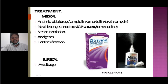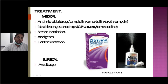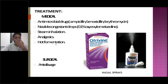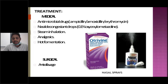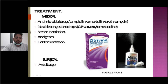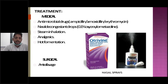Analgesics such as NSAIDs — aceclofenac, combi-flam, paracetamol, or diclofenac — are preferred for pain relief due to stasis of secretions. Other symptomatic treatment is hot fomentation — applying hot compresses over the cheek area, forehead, or nose region. When the patient is not responding to medical treatments, antral lavage is performed: passing a Crocker cannula through the inferior meatus into the maxillary sinus and draining all the pus through this surgically made opening, so the sinus is drained and the patient gets symptomatic relief.